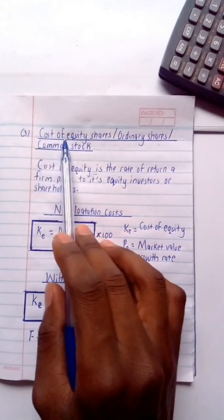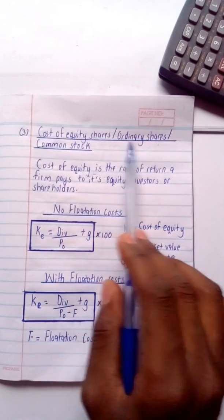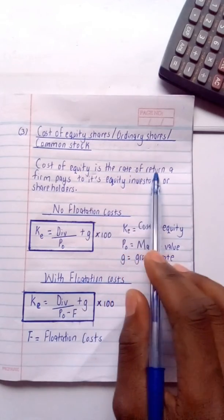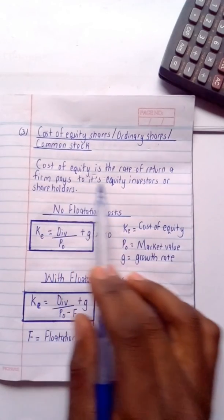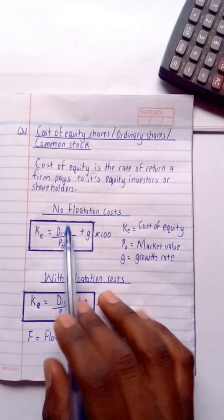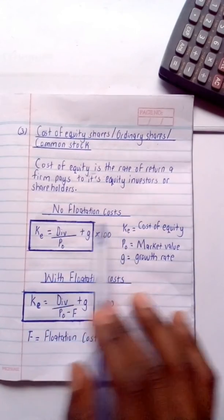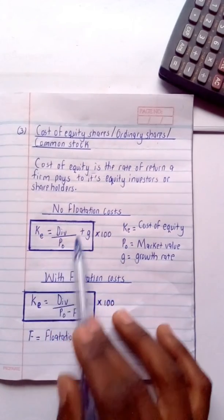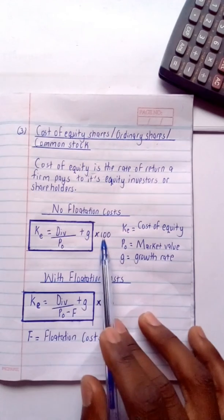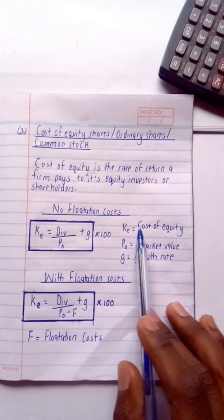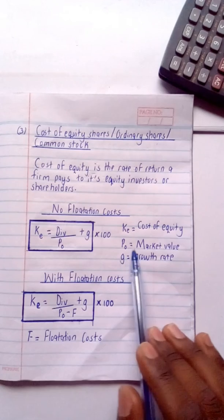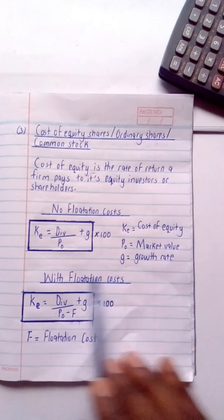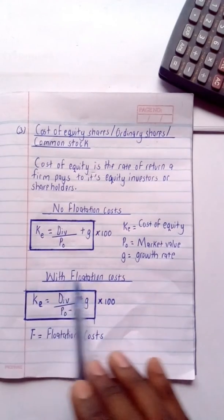Next is the cost of equity shares, also called ordinary shares or common stock. The cost of equity is the rate of return a firm pays to its equity investors or shareholders. With no flotation costs, the formula is: Ke = (Div / P₀ + g) × 100, where Ke is cost of equity, P₀ is market value, and g is the growth rate.